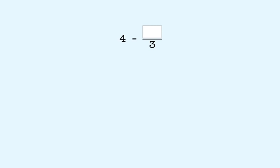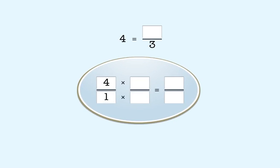You already know how to rewrite a fraction with a larger denominator, so let's start by rewriting the whole number 4 as a fraction over 1. Now we can write this fraction, 4 over 1, as an equivalent fraction with a denominator of 3. We first multiply 1 by 3 to get 3 as the new denominator.